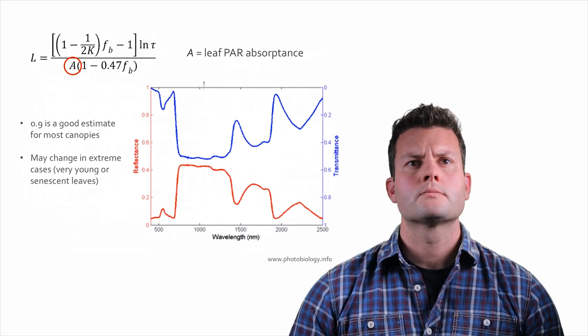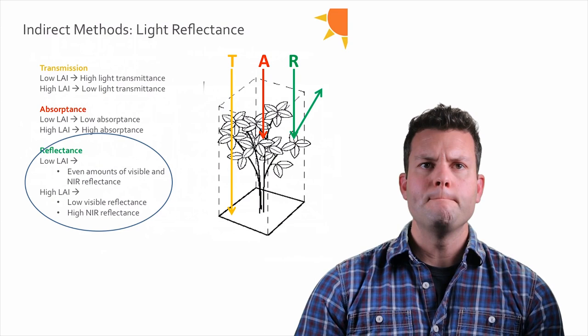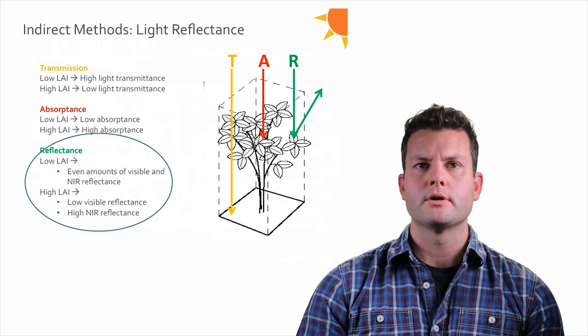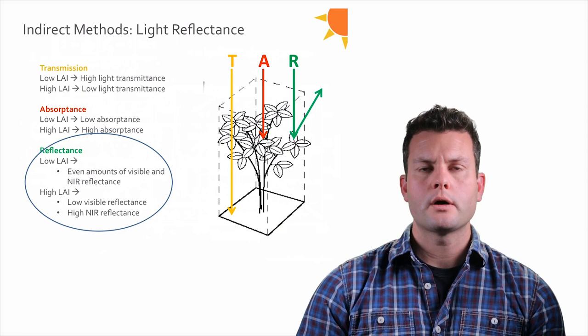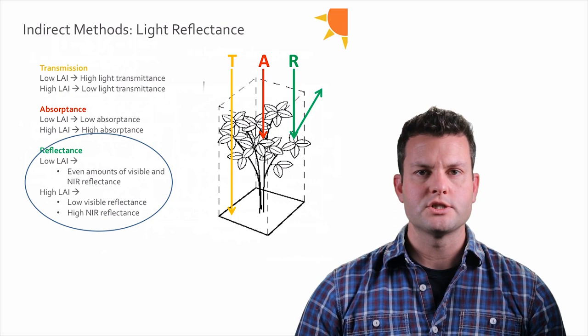Now we'll discuss how to use reflectance to calculate LAI. When LAI is very low, reflectance is roughly even in both the visible and near-infrared portions of the spectrum. As LAI increases, visible reflectance decreases while near-infrared reflectance tends to increase. There must therefore be a relationship between visible and near-infrared reflectance and LAI that we can exploit.